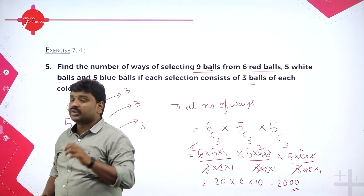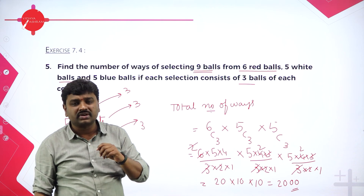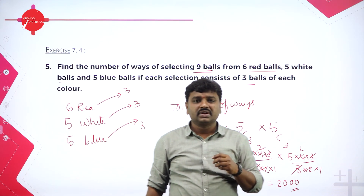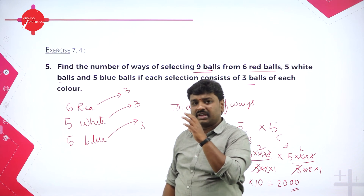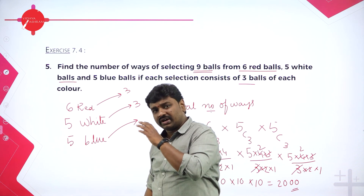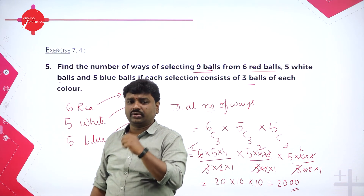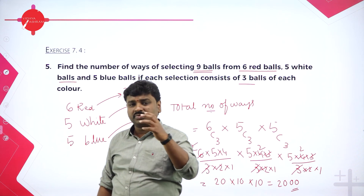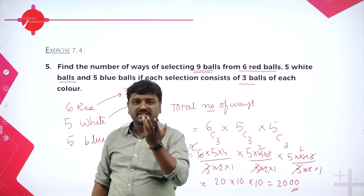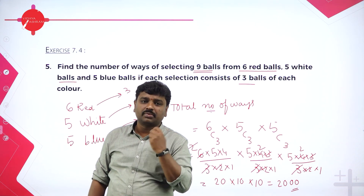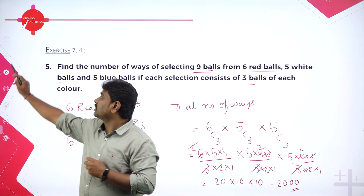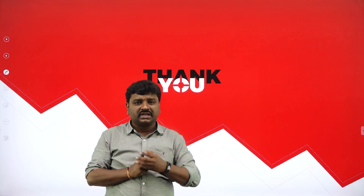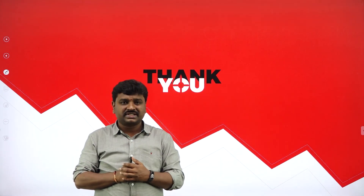In today's class I taught you what NCR is: selecting R out of N things, given by n factorial divided by (n minus r) factorial into r factorial. We solved problems on selecting combinations. In my next session I will go ahead with more problems on permutations. Thanks for attending the session — see you next time.